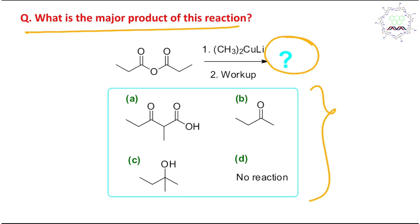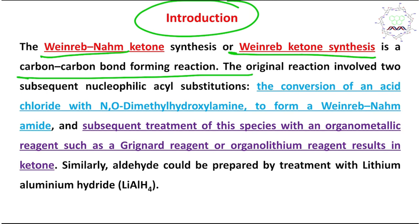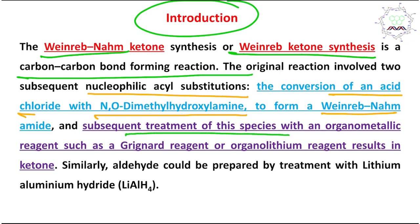Let's go to the main topic: the introduction of Weinreb ketone synthesis. This is a carbon-carbon bond forming reaction involving nucleophilic acyl substitution. The first step converts an acid chloride into the corresponding Weinreb amide by reaction with N,O-dimethylhydroxylamine. Further treatment of this amide with organometallic reagents like Grignard reagent or organolithium results in a ketone.